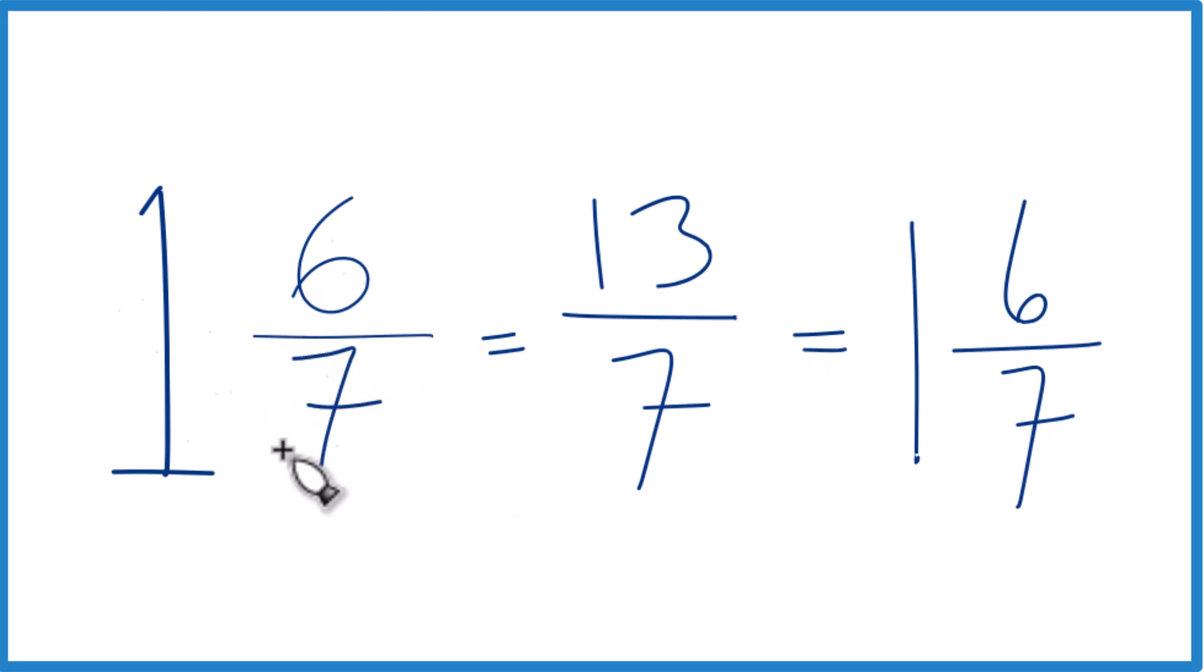That's it. This is Dr. B writing the mixed number 1 and 6 sevenths as an improper fraction. The answer is 13 sevenths. Thanks for watching.